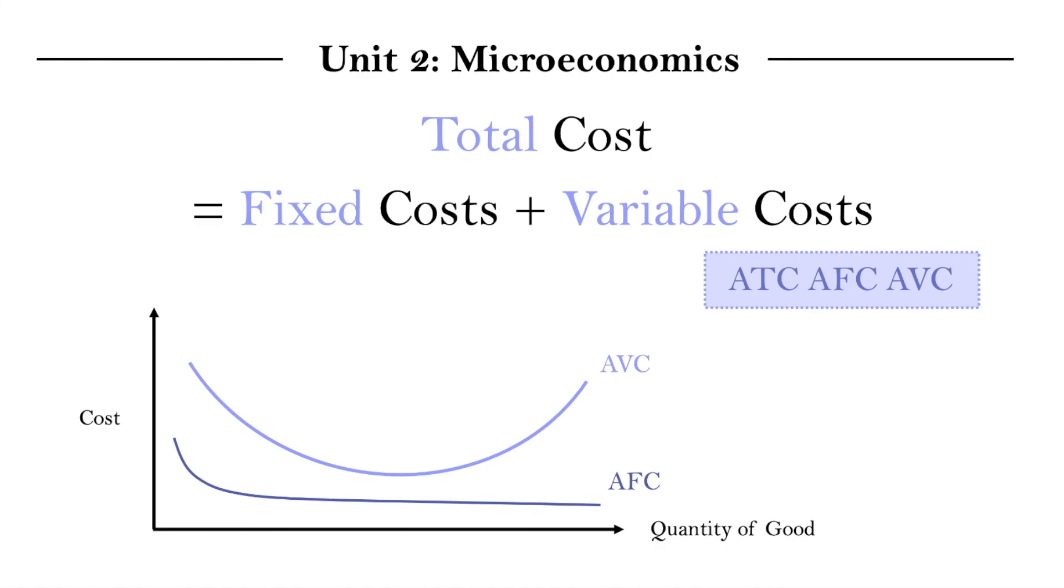And, if you guessed it right, it really is just the average variable cost curve shifted up by the amount of the average fixed cost curve. So, now we know what the cost curves of each average cost look like.